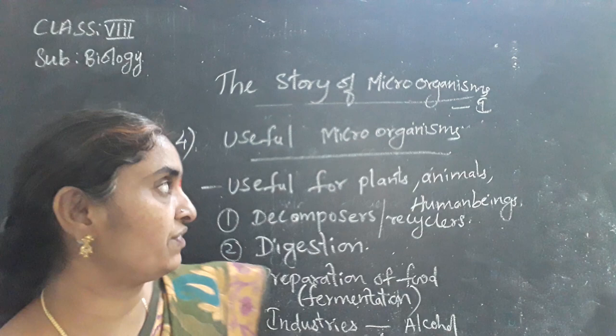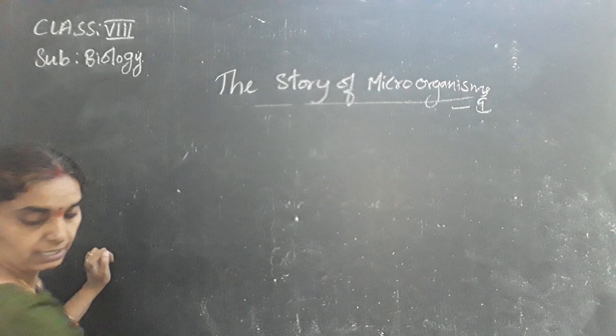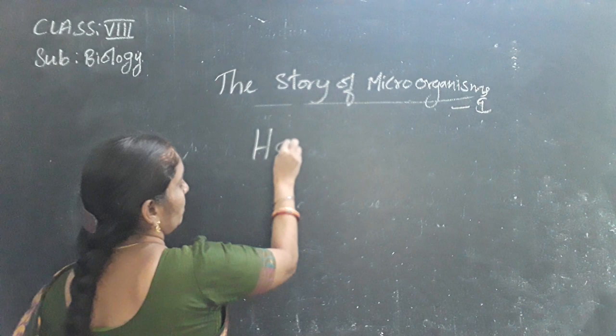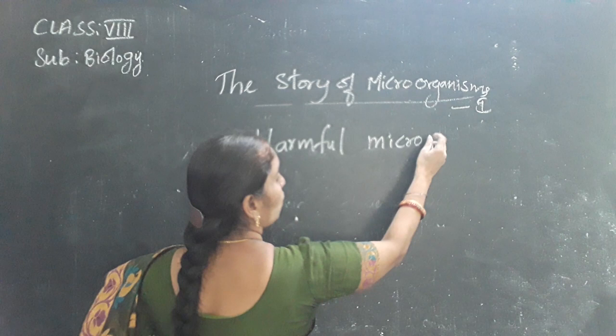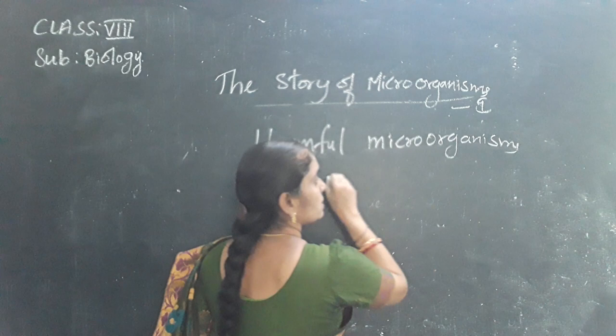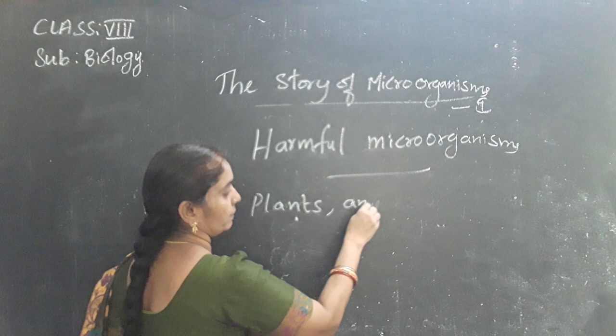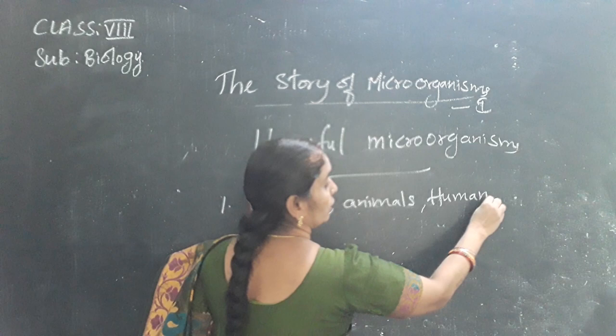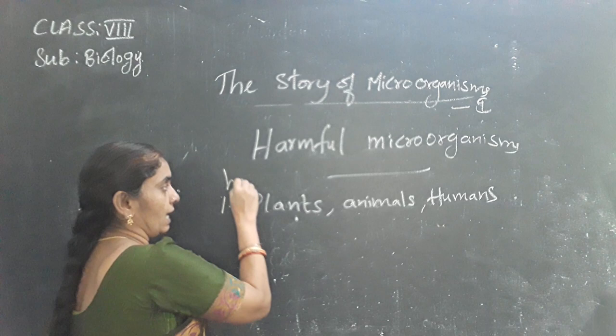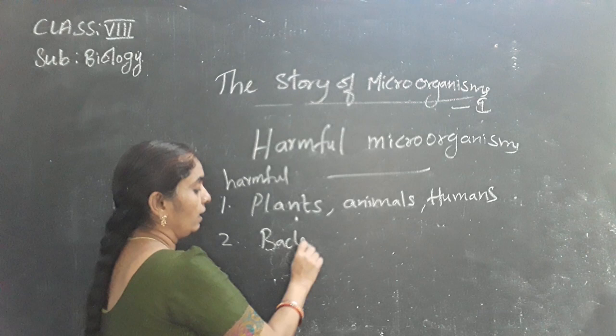Now we will see the harmful effects of micro-organisms. Bacteria, fungi, and viruses are harmful to plants, human beings, and animals. The bacterial diseases in human beings include typhoid, tuberculosis, and septicemia — blood poisoning. These are bacterial diseases caused by bacteria.